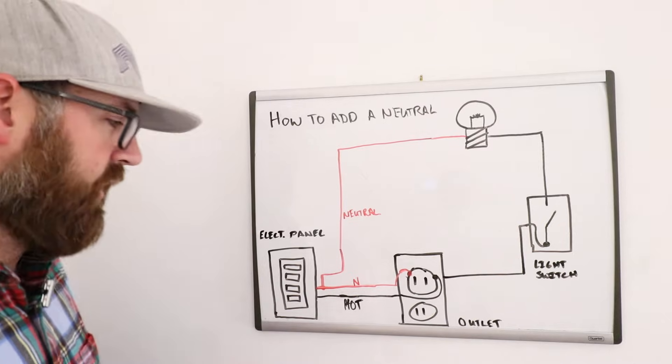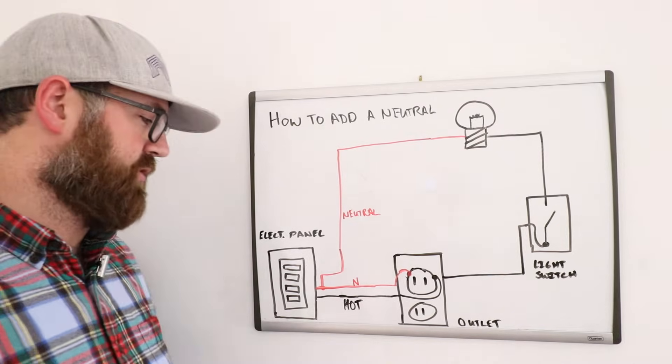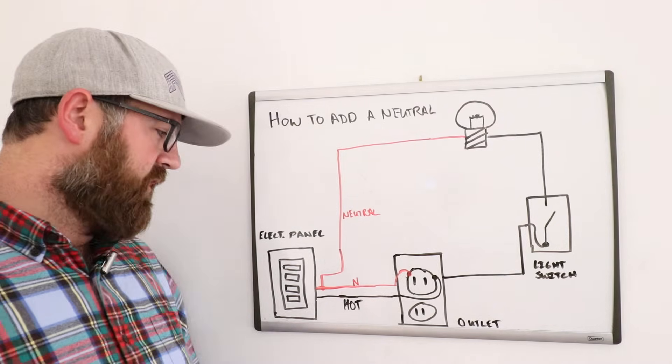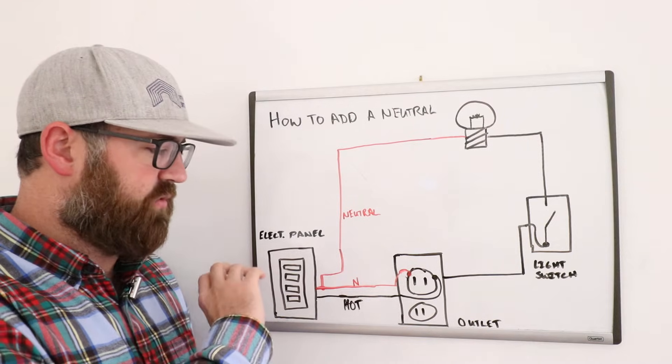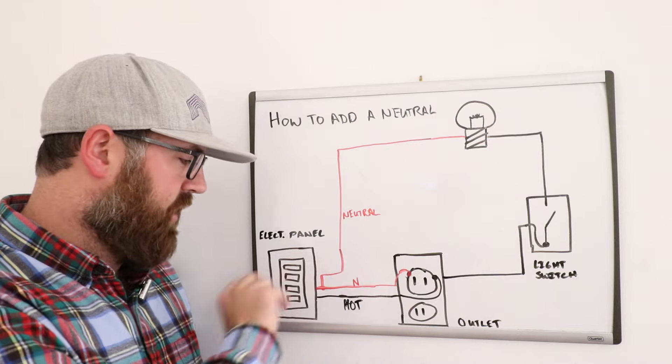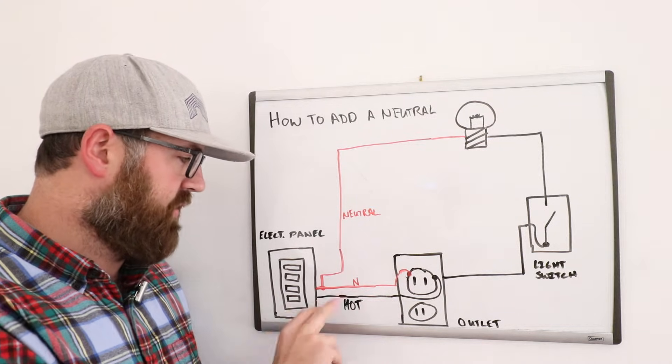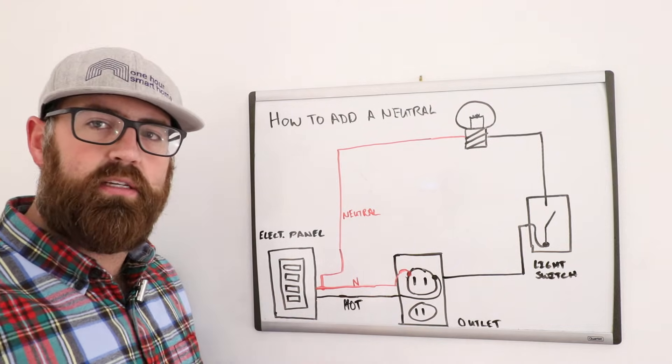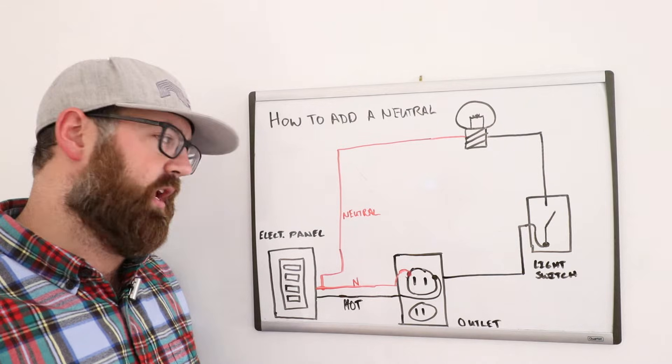Now we'll show you how to add a neutral wire and what that means. What I've got drawn here is basically just a typical electrical circuit. And out of an electrical panel, it's going to feed to potentially an outlet in a room, a light switch, and the light. And we've got drawn here the hot wire and the neutral wire and those typical paths that these wires would take throughout your home.